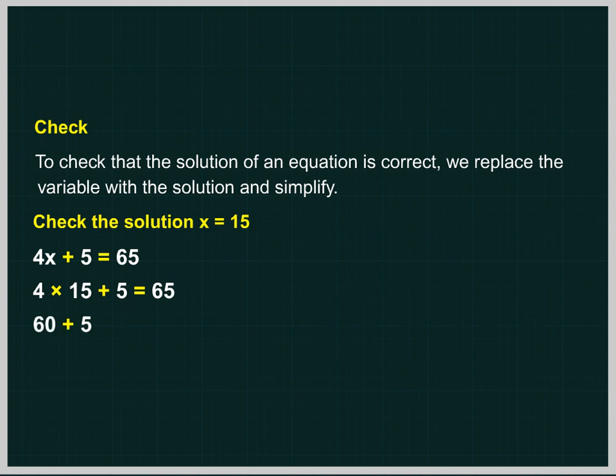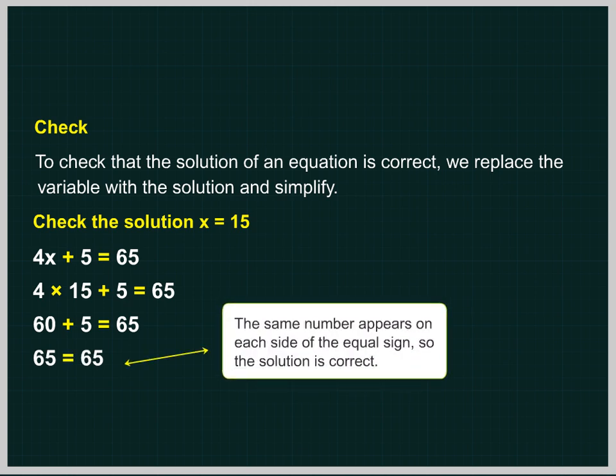60 plus 5 equal to 65. 65 equal to 65. The same number appears on each side of the equal sign, so the solution is correct.